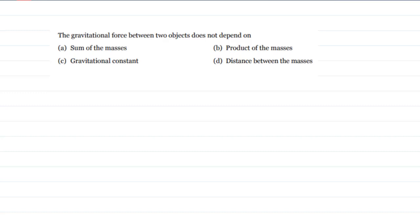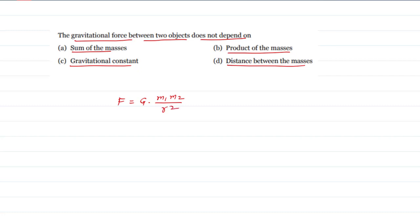A conceptual question: the gravitational force between two objects does not depend on which of the following — sum of the masses, product of the masses, gravitational constant, or distance between the masses? Since F equals G times M1 times M2 over R squared, it depends on the gravitational constant, the distance, and the product of masses. So the correct answer is the sum of the masses — the force does not depend on the sum.